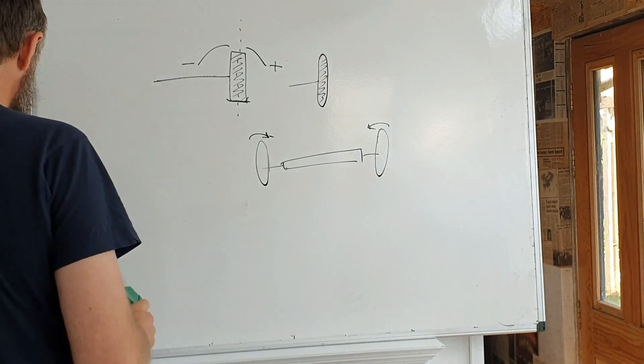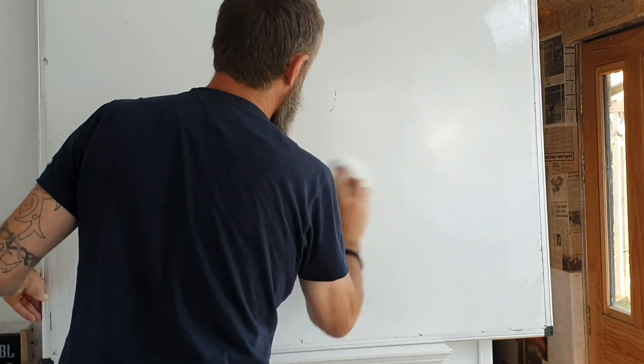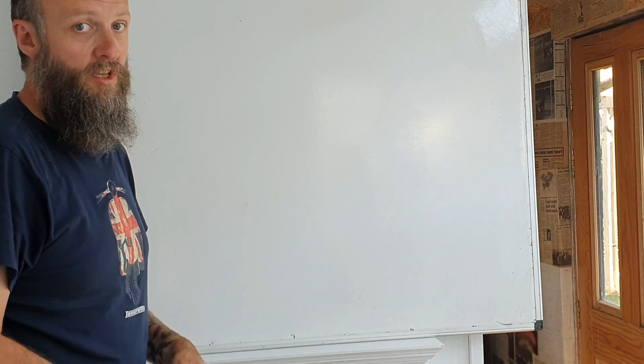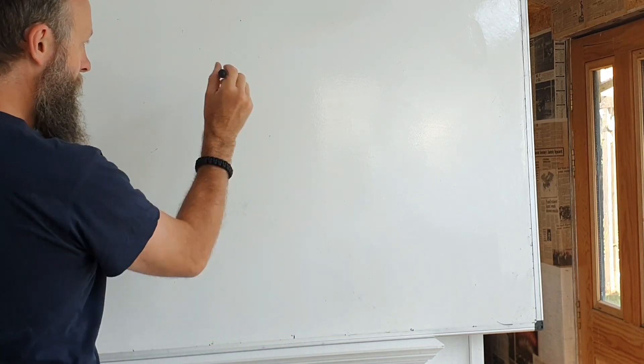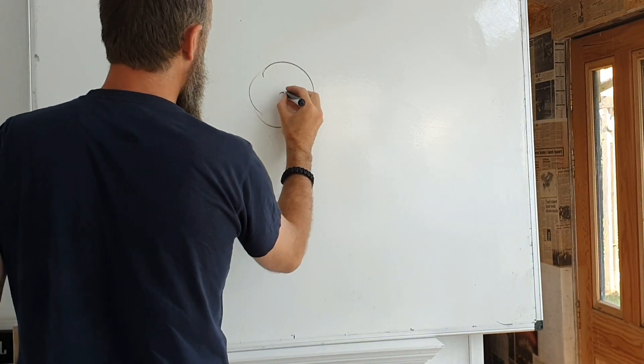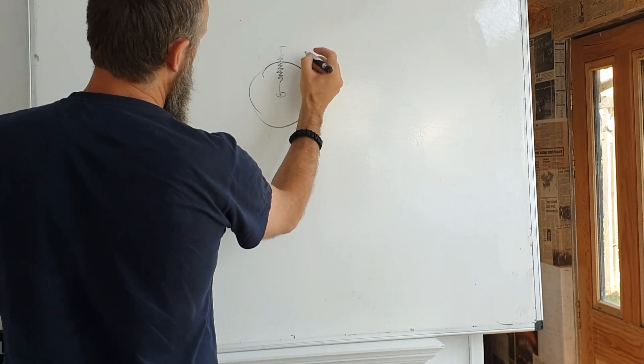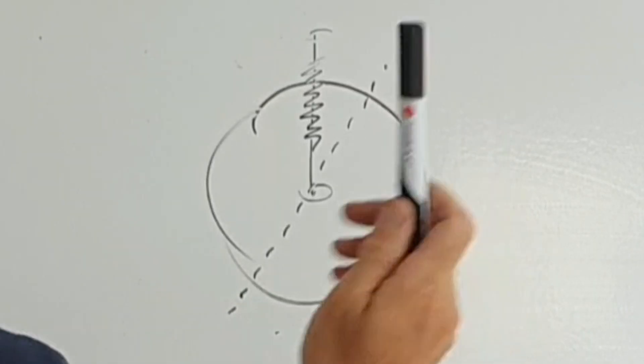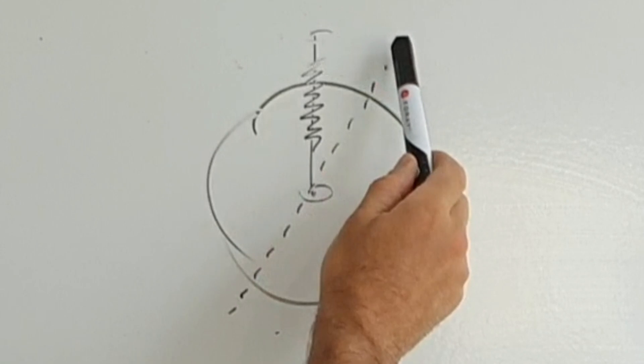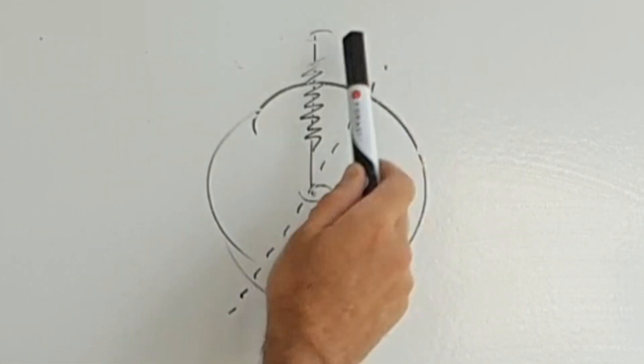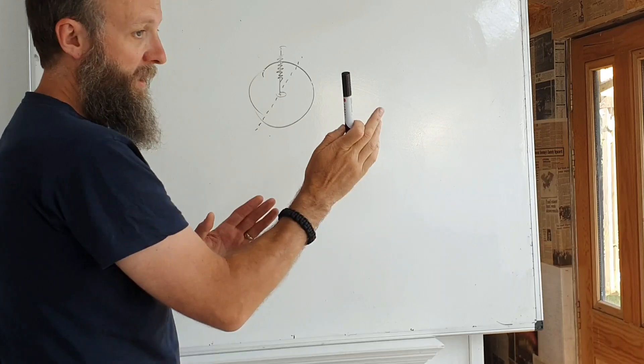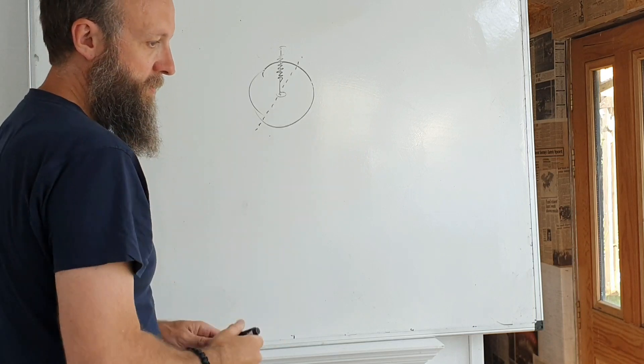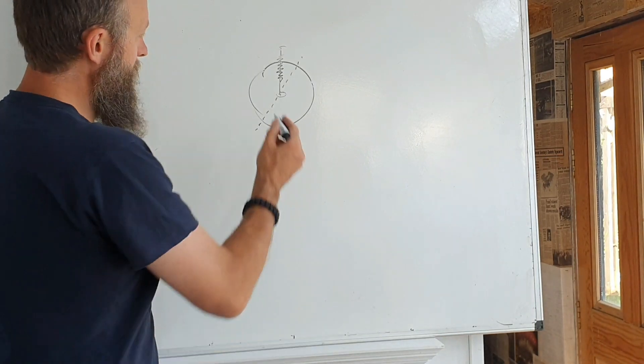So, on to the next one, caster. Okay, so caster is looking down the axle. So, there's your wheel, suspension turret. Caster is effectively the angle at which the suspension turret or the steering mechanism tilts forward or backwards. Positive camber is as you see it there. The suspension turret is effectively tilted backwards.